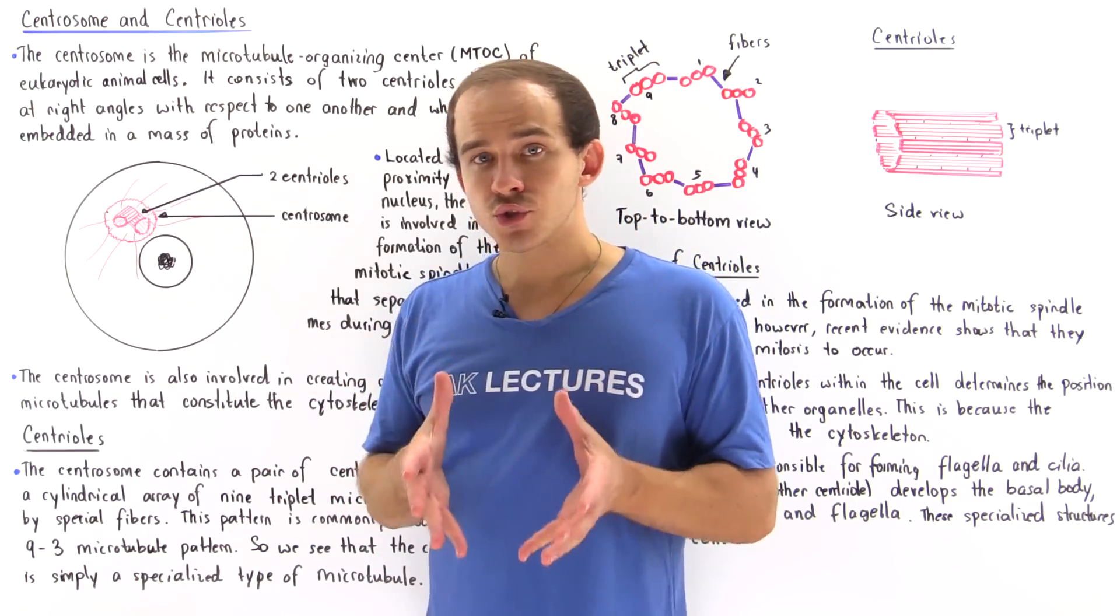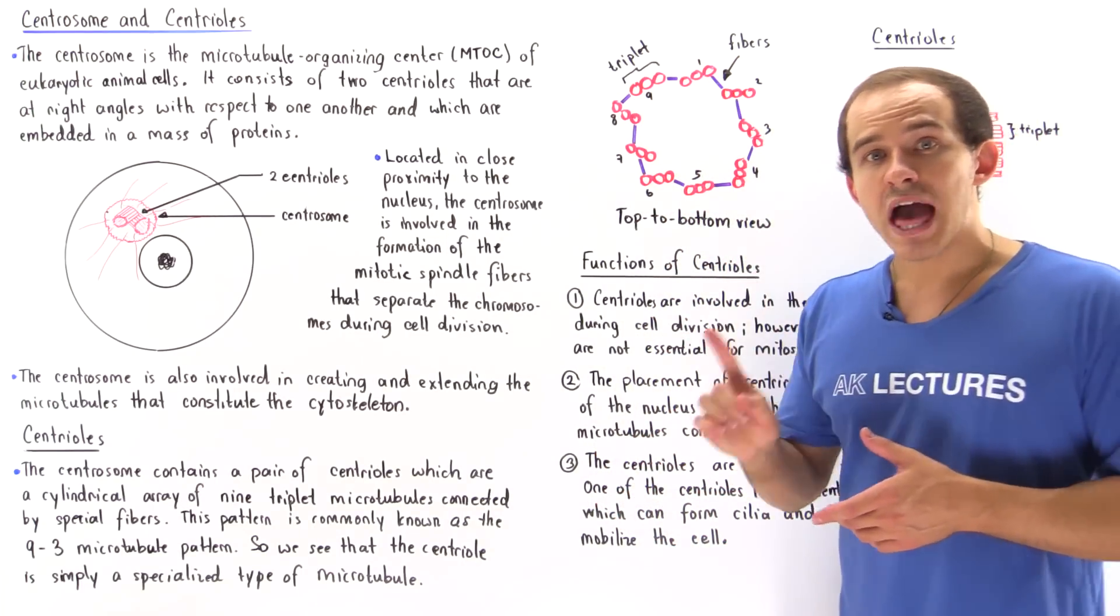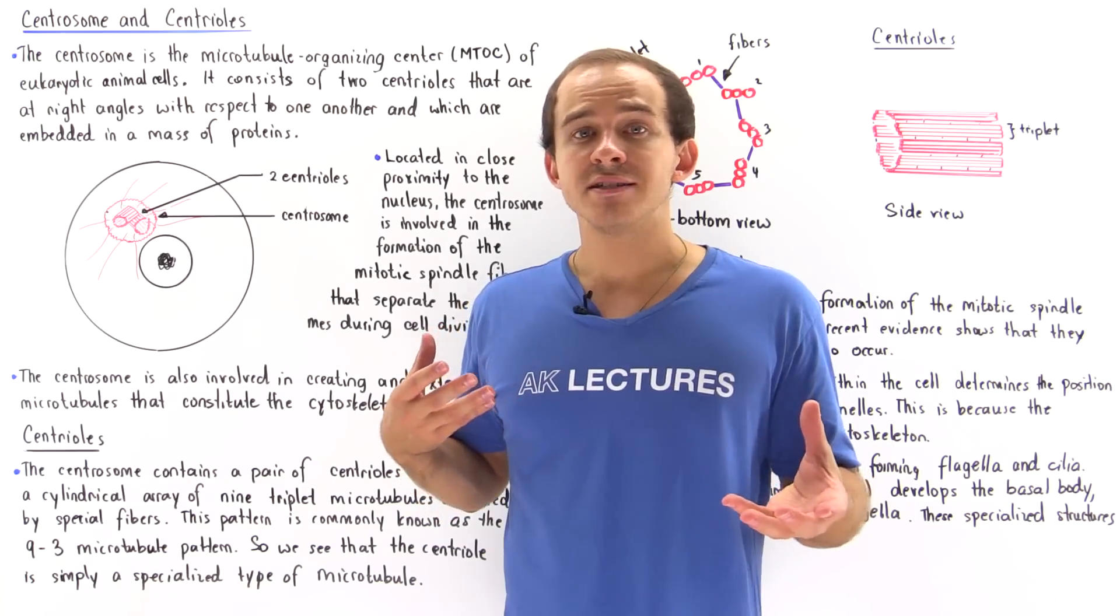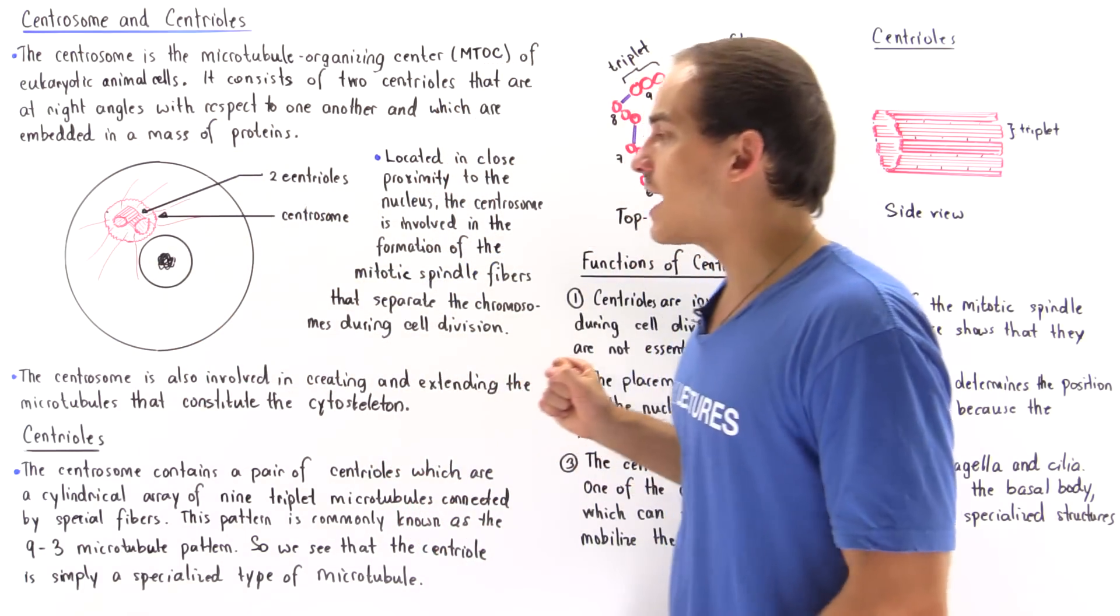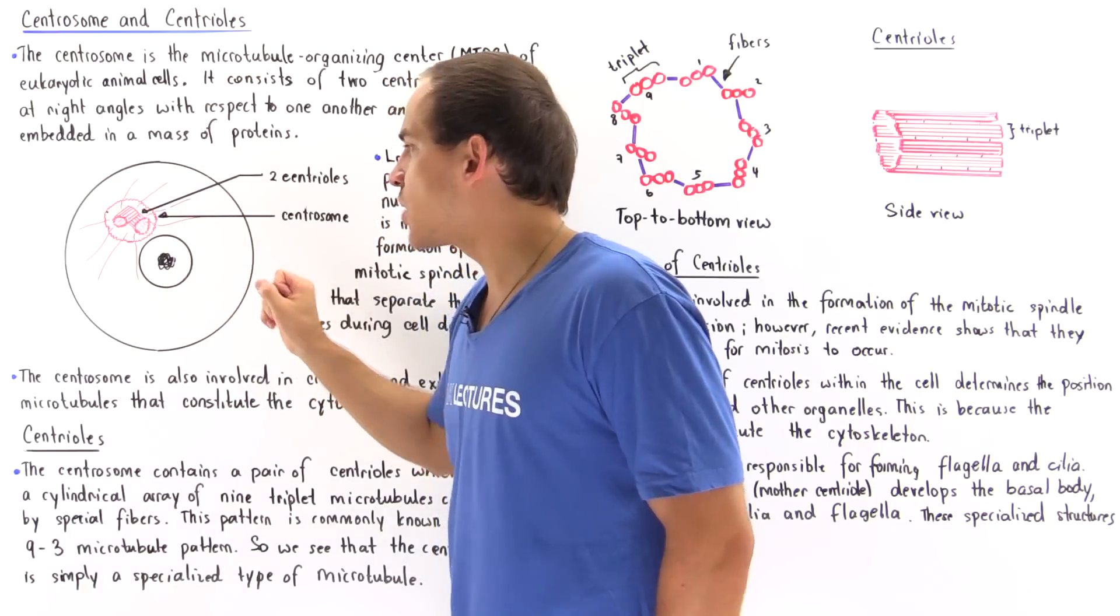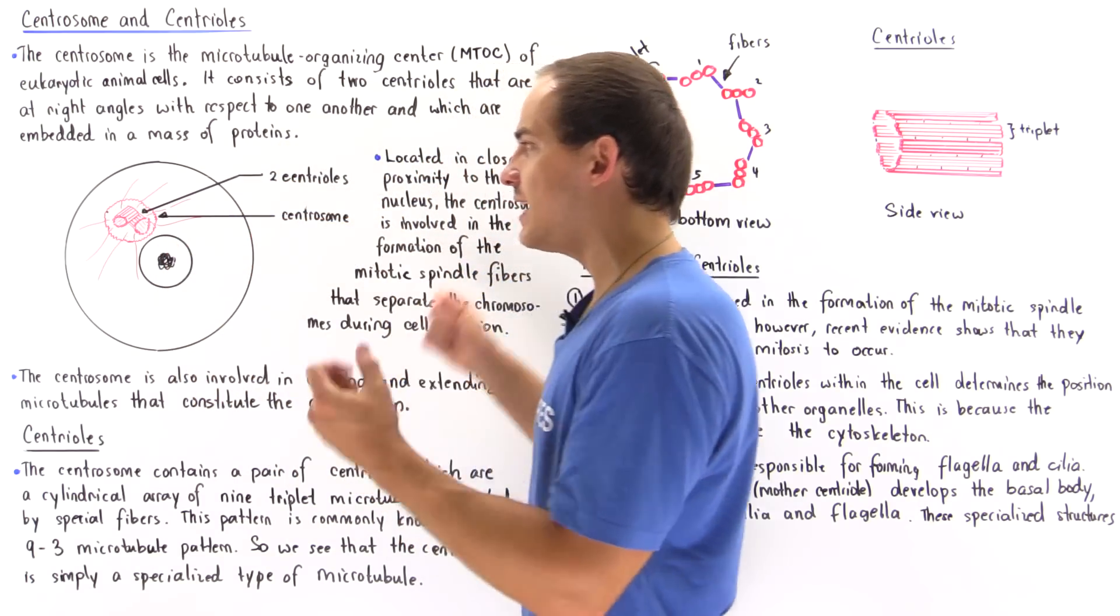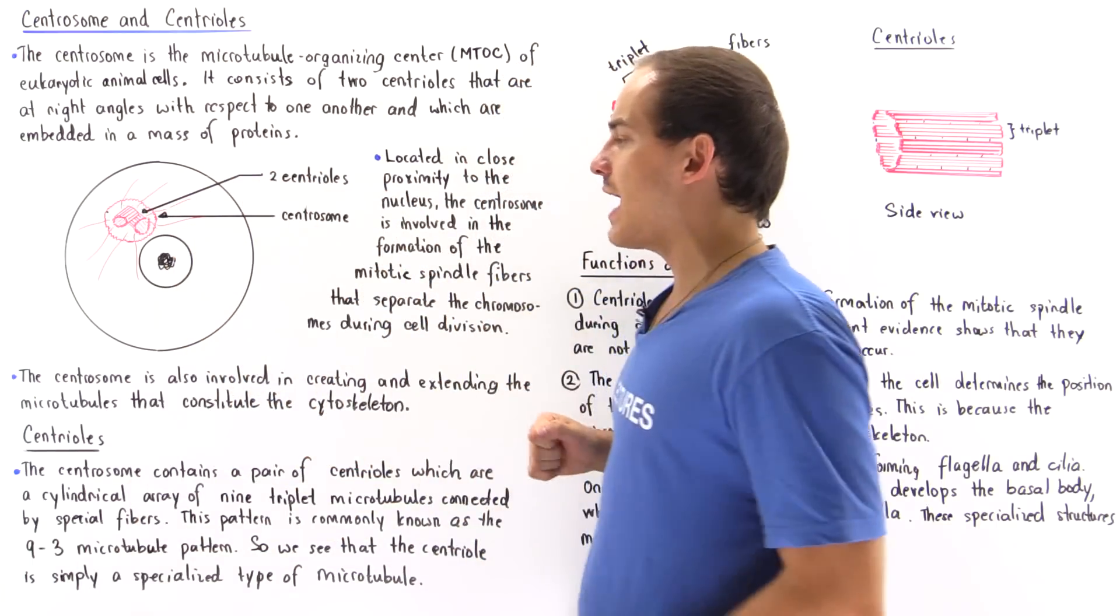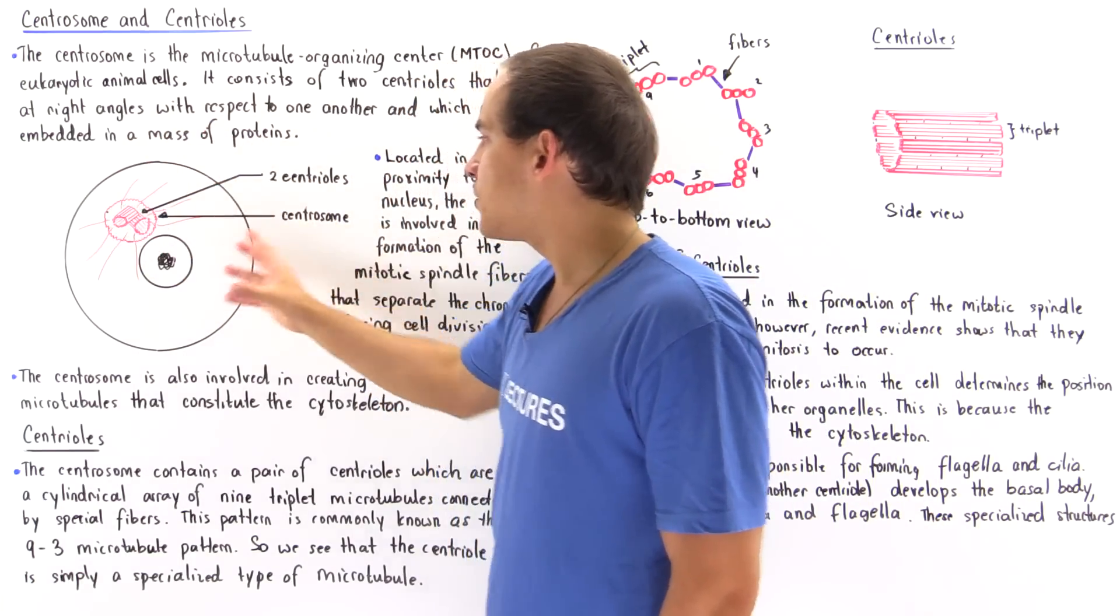Every single one of our centrosomes in any given eukaryotic animal cell consists of a pair of two centrioles that are oriented at a 90 degree angle with respect to one another. These two centrioles are basically embedded in hundreds of proteins. So let's suppose this is our eukaryotic animal cell. This is our nucleus and right next to our nucleus we have the centrosome. We have hundreds of proteins in this space, a condensed mass of proteins, and inside that we have two centrioles that are oriented at a 90 degree angle with respect to one another. We also have these microtubules that permeate throughout the entire cell.